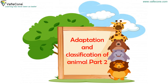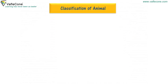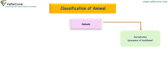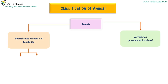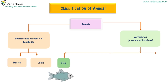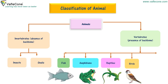Adaptation and Classification of Animals, Part 2. Classification of animals is divided into invertebrates and vertebrates. Invertebrates include animals such as insects and snails. Vertebrates include animals such as fish, amphibians, reptiles, birds, and mammals.